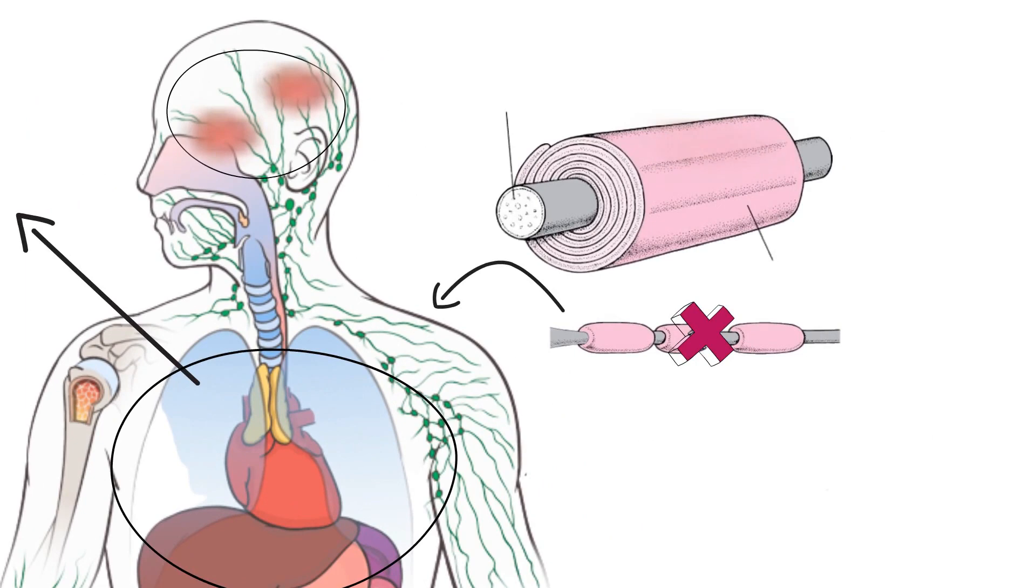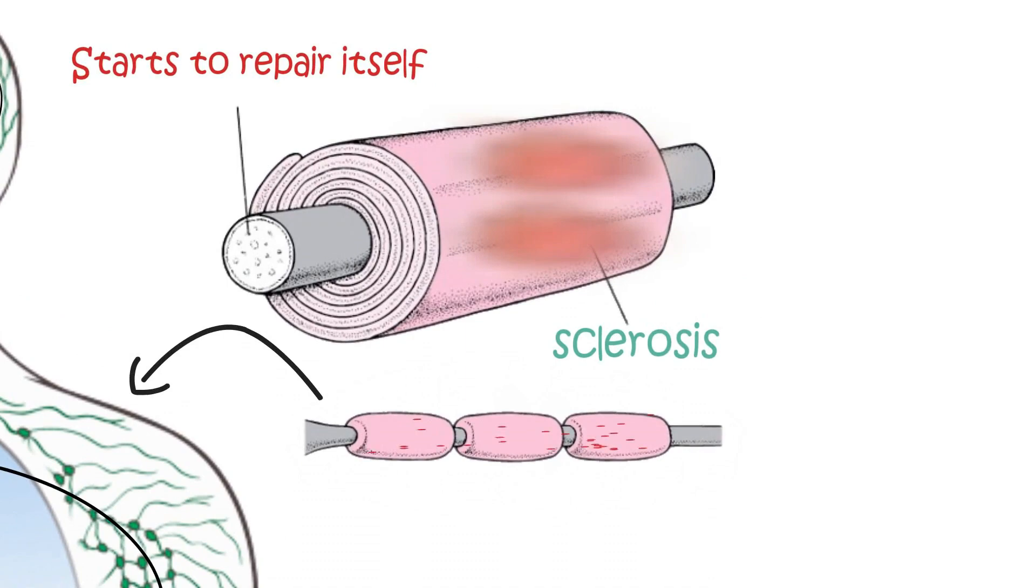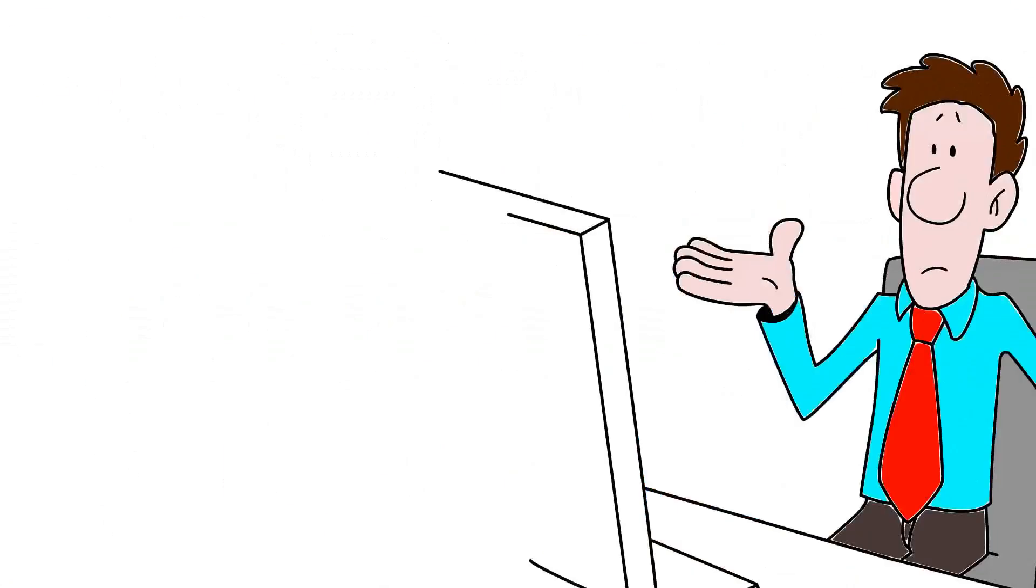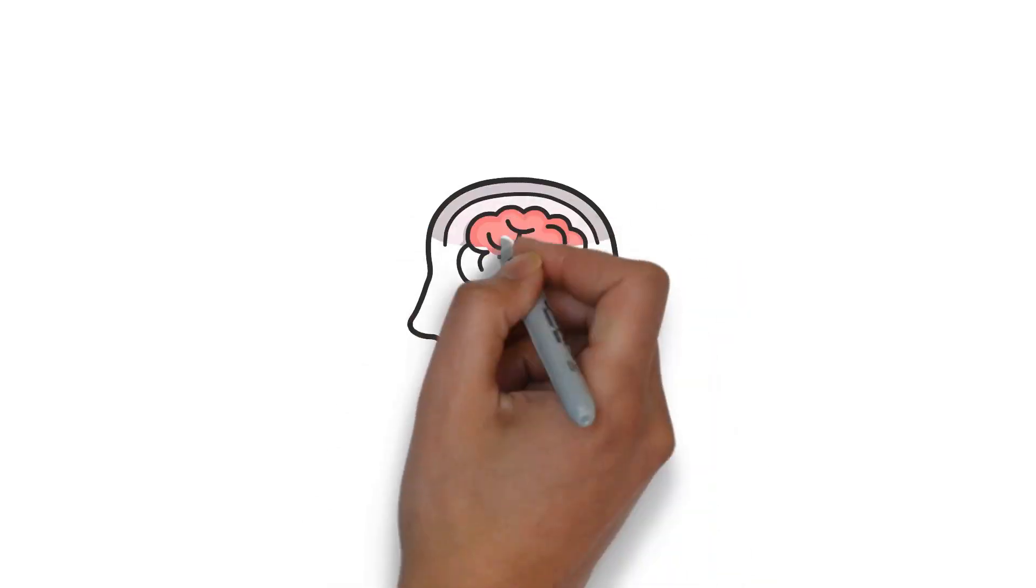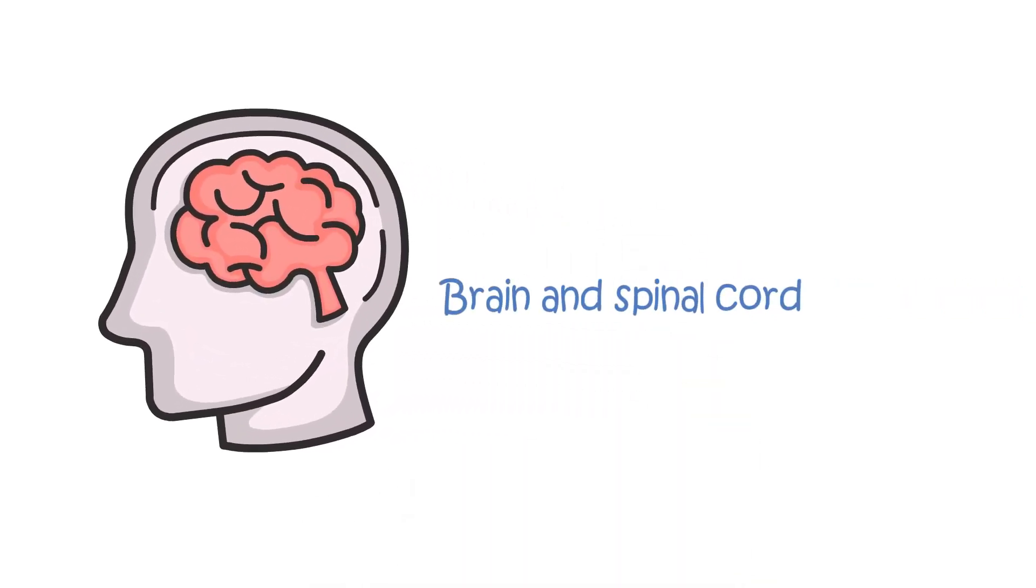Once the inflammation clears, the myelin sheath starts to repair itself and the nerve fibers start to function properly again. However, repeated bouts of inflammation can cause sclerosis which means scars or plaques on the nerve fibers and this leads to permanent damage. MS patients end up developing multiple areas of scarring in the central nervous system, brain and spinal cord.